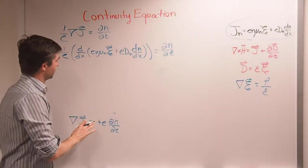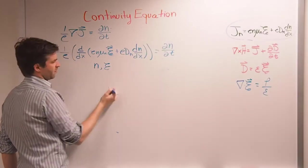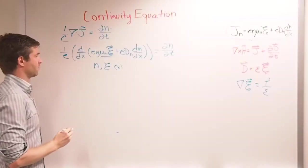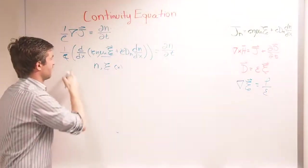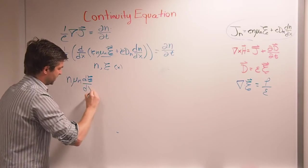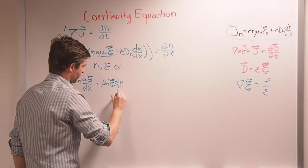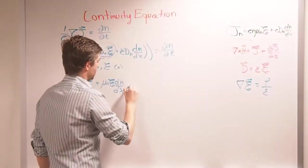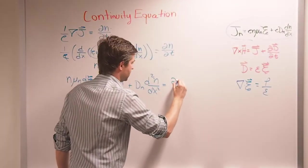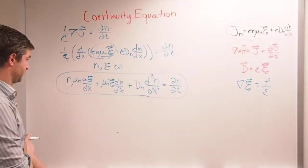An important thing to remember is that N (electron density) and E (electric field) are both functions of X, so we have to use the product rule. The e's cancel out, making it a bit nicer. Using the product rule: N·mu_N·dE/dX + mu_N·E·dN/dX — that takes care of the drift term. Then plus D_N·d²N/dX² equals dN/dt. That's our continuity equation involving conduction current.